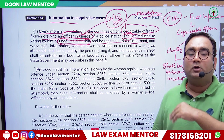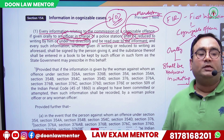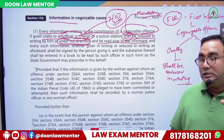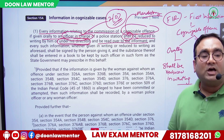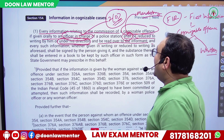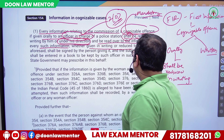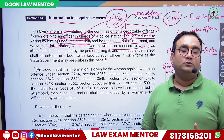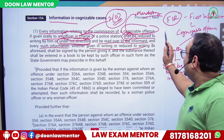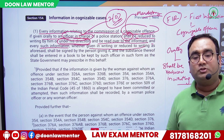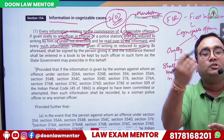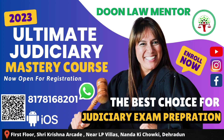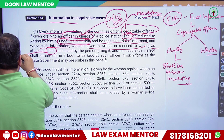This prevents the informant from later saying 'I said something different and you wrote something else.' You should be investigating the matter about which the informant came to give information. Once you have explained and confirmed the written content, every such information — whether given originally in writing or reduced to writing from oral form — shall be signed by the person giving it.